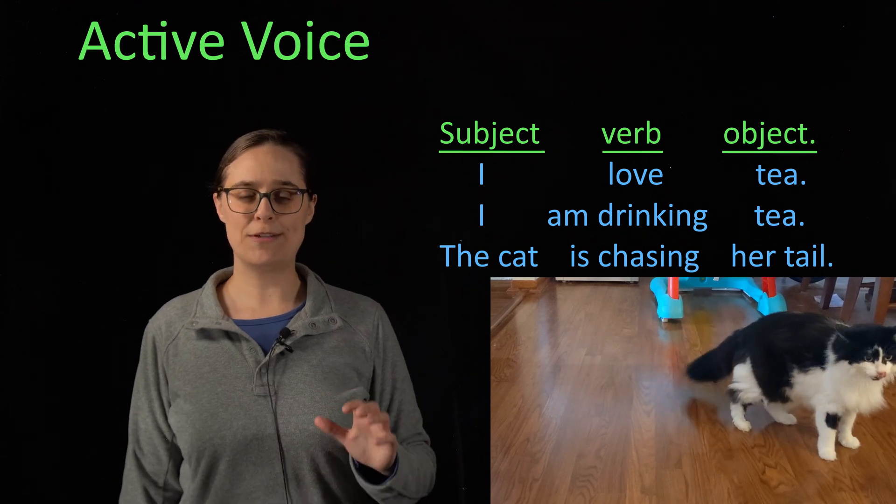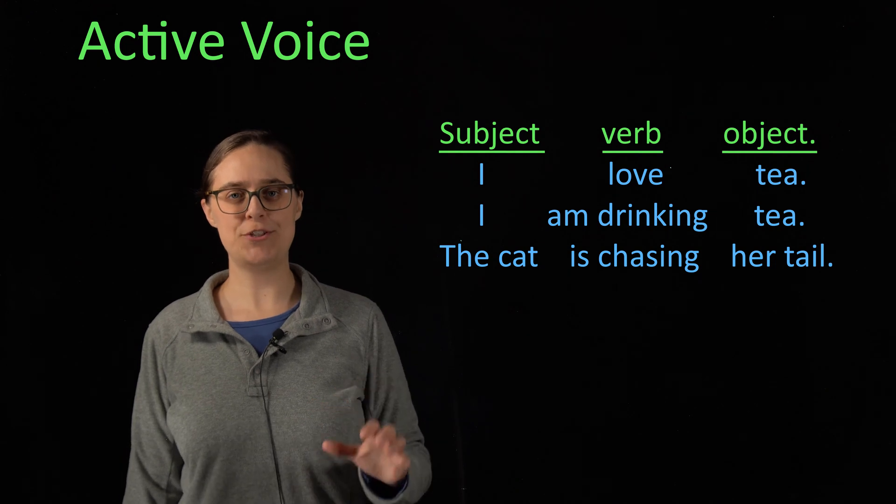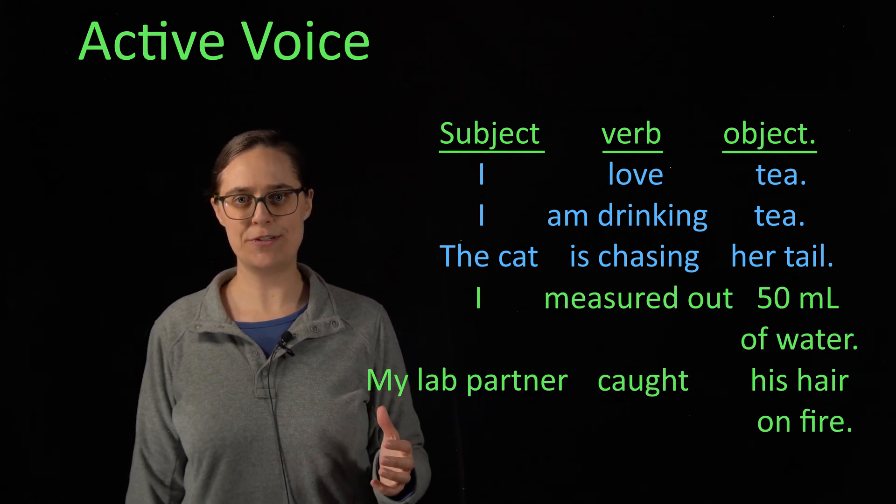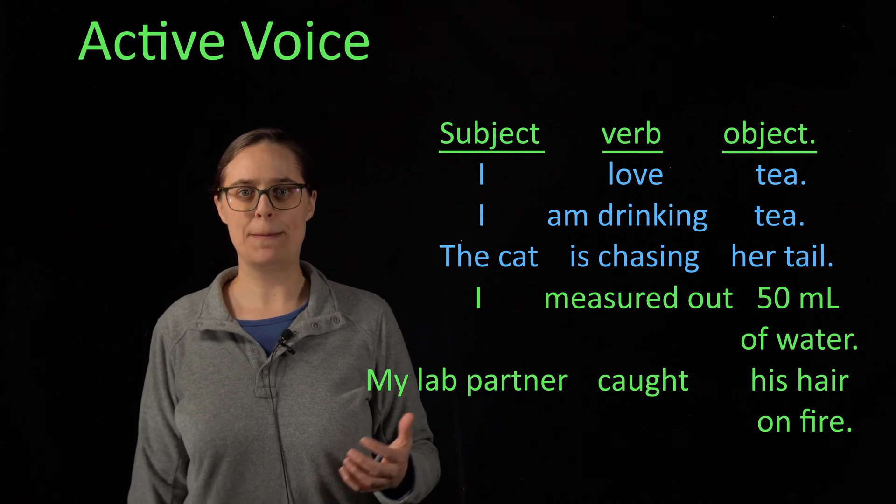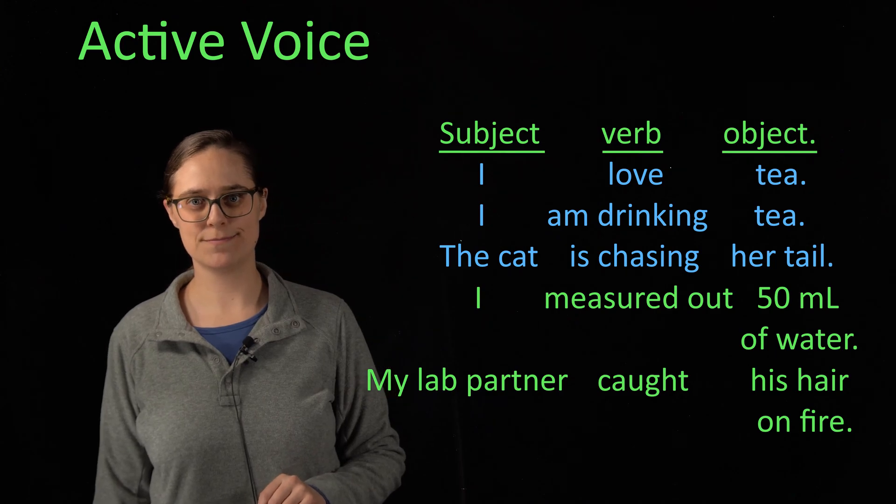If you're writing about some lab experiment you carried out and you accidentally slip into active voice, generally the subject of the sentence is going to be a person. I measured out 50 milliliters of water. My lab partner caught his hair on fire. This is what you want to avoid. You want to write in passive voice.